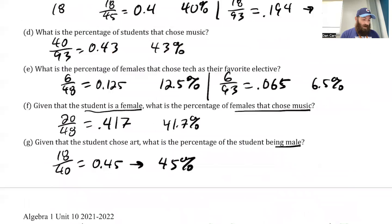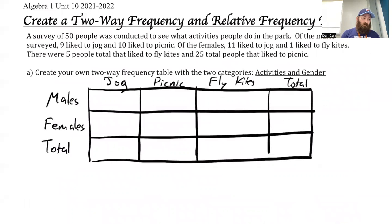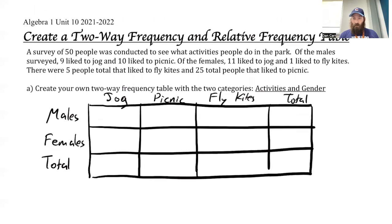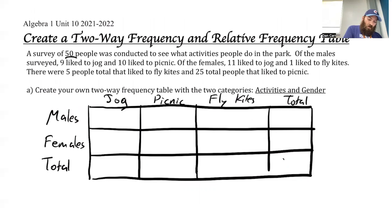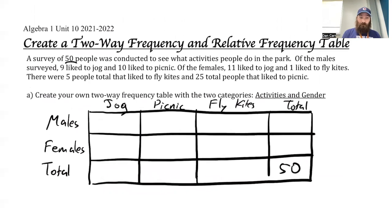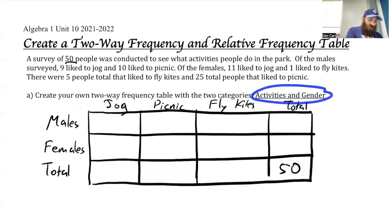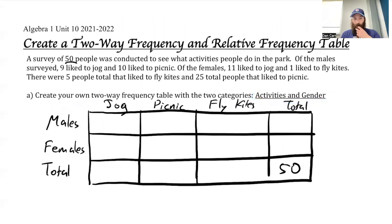So for the next example, we're going to make our own frequency table and fill in the information that we have, and we might have to fill in some missing information after that. Survey of 50 people. Because we know that the frequency table is going to have two categories — activities, which is right here, and gender, which is right here.